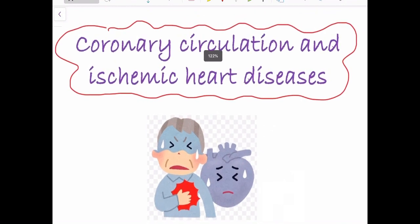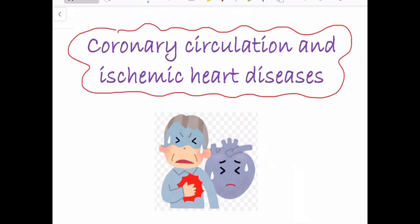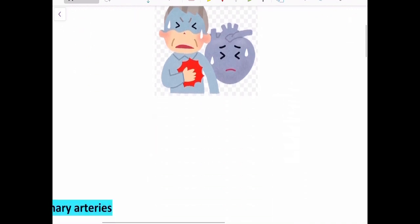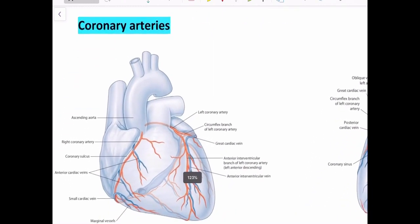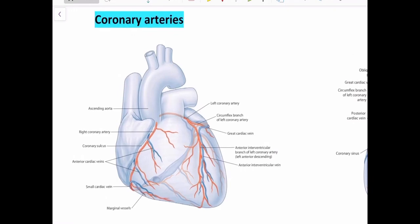The next important thing is when this coronary circulation is problematic, when the heart does not get enough blood, then you get disease conditions called ischemic heart diseases. First, we are going to talk about coronary arteries. There are mainly two coronary arteries: the right coronary artery and the left coronary artery. These are the first two branches of the ascending aorta.